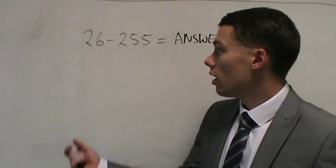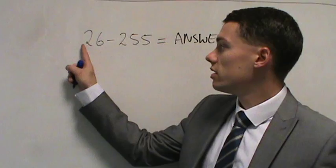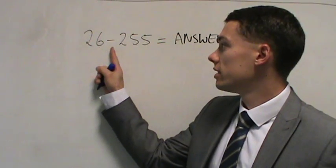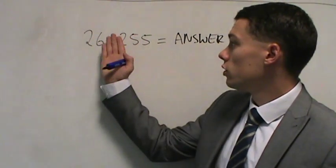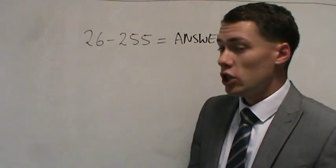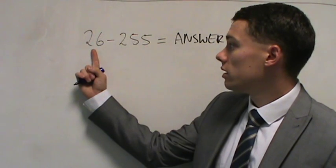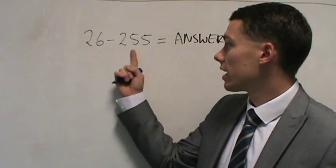Now if you notice, if you ignore the symbols, this is positive 26, this is negative 255. If you ignore the symbols, ignore the negative, ignore the positive, you'll see that this first number is smaller than this second number.